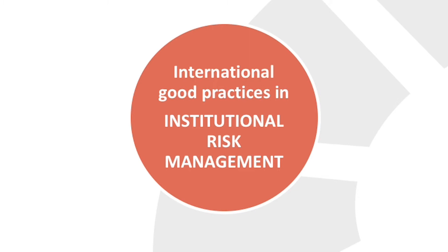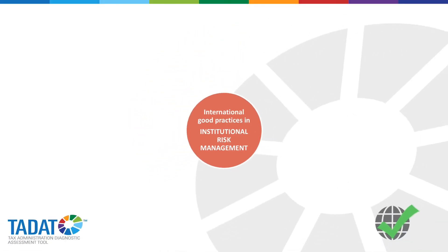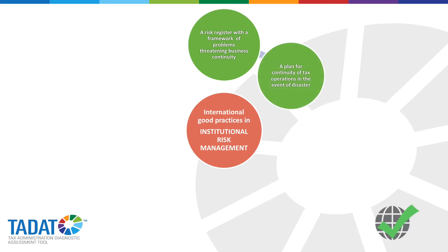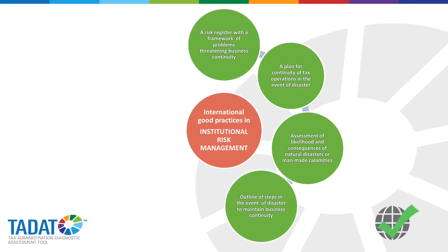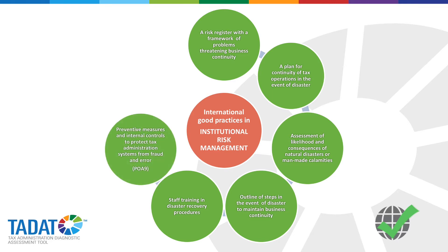Now let's look at five international good practices in institutional risk management. First, a tax administration should have a risk register with a framework of problems threatening business continuity. It should also have a plan for continuity of tax operations in the event of a disaster, such as a fire or earthquake. Second, the tax administration should have an assessment of the likelihood and consequences of natural disasters or disruptive human-caused calamities. Third, it should outline the steps in the event of a disaster to maintain business continuity. Fourth, it is important to have an extremely well-trained staff in case of a disaster in order to recover procedures quickly. And fifth, a tax administration should have preventative measures and internal controls to protect tax administration systems from fraud and error.